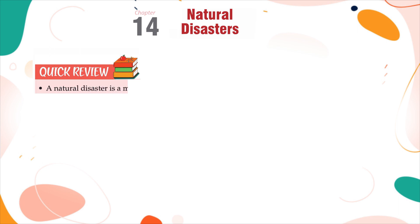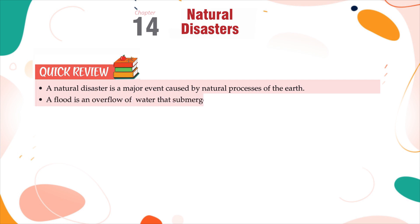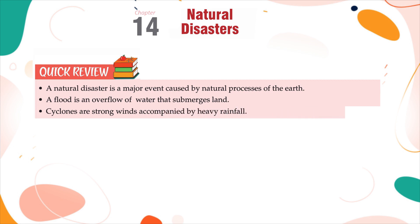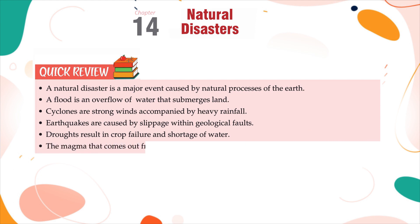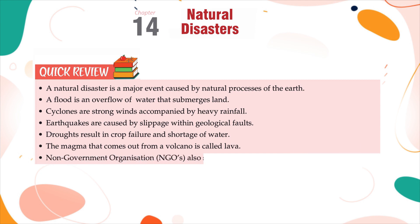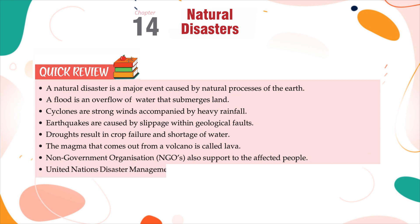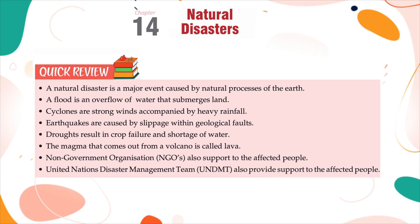Quick Review: A natural disaster is a major event caused by natural processes of the earth. A flood is an overflow of water that submerges land. Cyclones are strong winds accompanied by heavy rainfall. Earthquakes are caused by slippage within geological faults. Droughts result in crop failure and shortage of water. The magma that comes out from a volcano is called lava. NGOs and the United Nations Disaster Management Team (UNDMT) also provide support to the affected people.